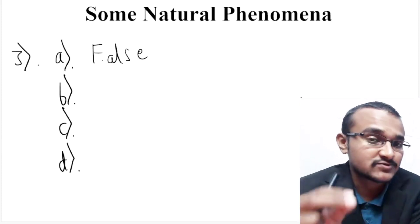Coming to the tenth question, they have asked to list three states in our country where earthquakes are more prone to happen. Referring to the seismic fault zones explained in my previous video — wherever two earth plates meet, vibrations occur and earthquakes are more likely. The three states are Jammu and Kashmir, Gujarat, and Assam, because fault zones exist in all three of these states.